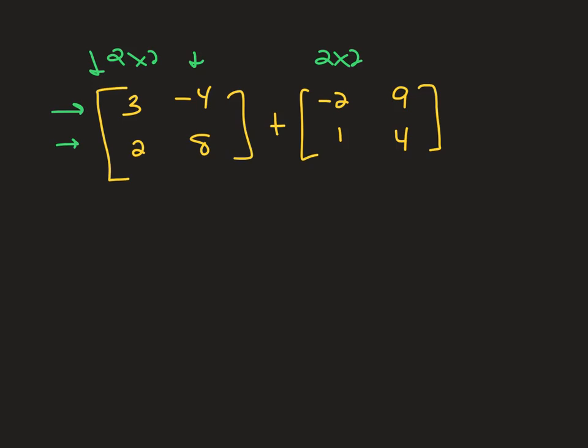It's so easy. When you add them, you just add straight across. The numbers inside are called elements. You just add the 3 and the negative 2, you have the negative 4 and the 9, you have the 2 and the 1, the 8 and the 4, and there you go. That's really all there is to it. Addition of matrices, just make sure they're the same size, same dimensions.